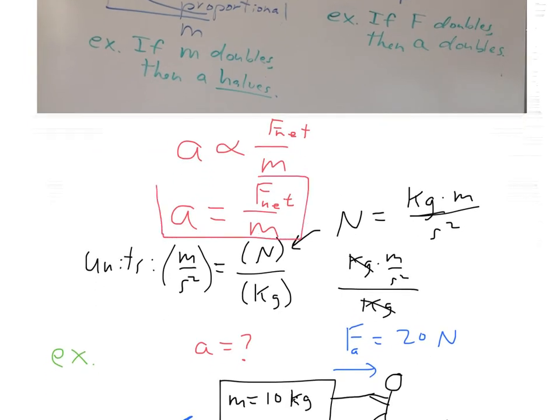But we can also do a little algebra with it. We can multiply both sides times mass. Now the masses are going to cancel, mass divided by mass, so we have just converted it to another form which is written like this: F net, net force, equals mass times acceleration.